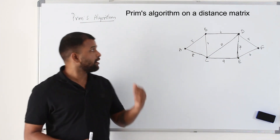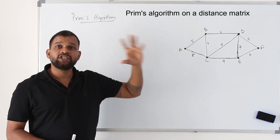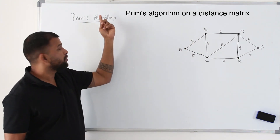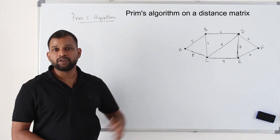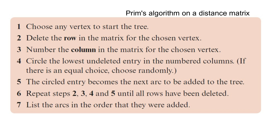The good thing about Prim's algorithm is you can apply it not only on a graph but on a distance matrix also. You don't need a graph. As long as you have a distance matrix you can apply Prim's algorithm to find the MST — minimum spanning tree. Let me show you on a distance matrix how to apply this step by step.